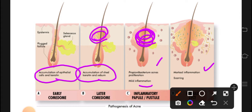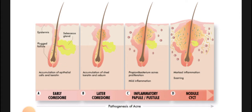What will proliferation of bacteria cause? Inflammation starts. Inflammation will increase more and more, and this will start scarring. Early comedones will become later comedones. Inflammatory papules or pustules will develop because bacteria proliferate. Ultimately it will become a big nodule.